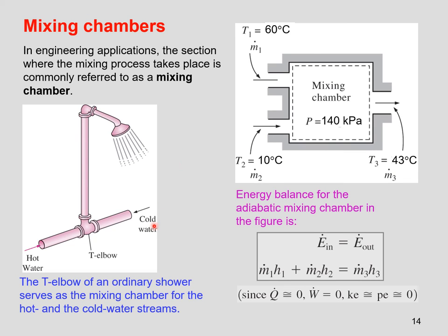Another kind of device is what's known as a mixing chamber. This is a section of pipe where two flows meet together and combine. You have a flow of hot water in, cold water in, into a T-elbow, like in a shower. The energy balance is pretty simple. You have two flows coming in and one flow going out. The energy coming in has to equal the energy going out.